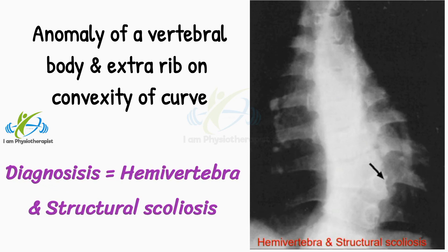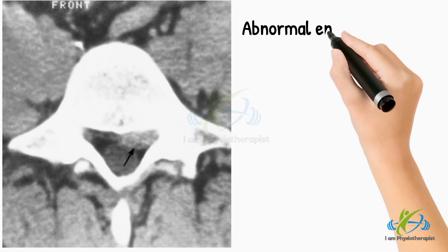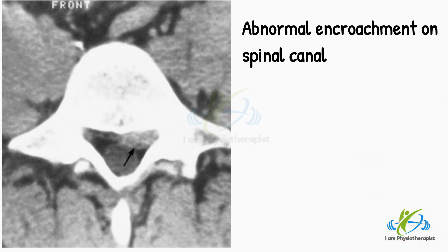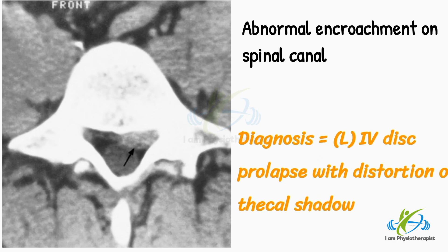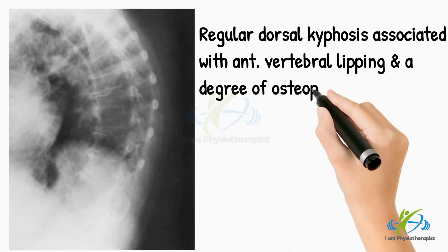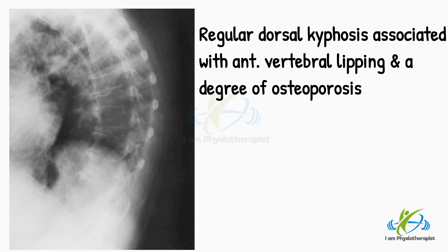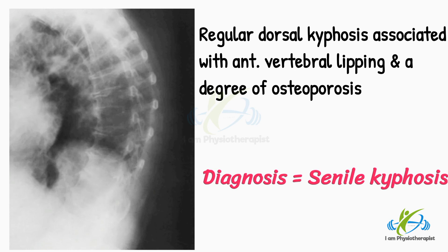Diagnosis is hemivertebra and structural scoliosis. This CT scan shows an abnormal encroachment on the spinal canal. Diagnosis is left-sided intervertebral disc prolapse with distortion of the thecal shadow. This radiograph shows a regular dorsal kyphosis associated with anterior vertebral lipping and a degree of osteoporosis. Diagnosis is senile kyphosis.